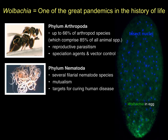Wolbachia also occur in nematodes — particularly the filarial nematodes, which are infectious to mammals such as dogs and humans. In this case, the Wolbachia are mutualistic and required for oogenesis and larval development of the filarial nematodes. They are considered targets for curing human disease, because if you get rid of the mutualistic Wolbachia with an antibiotic or a phage lysine, you will essentially cause infertility and lead to lower production of these filarial nematodes in the host, and you can also suspend larval development.